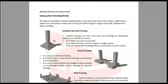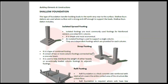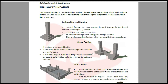For each column of the building we provide individual footings at the bottom layer. Strap footing is the next type — it is a combined footing where one footing connects two columns using a concrete beam called a strap.